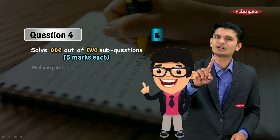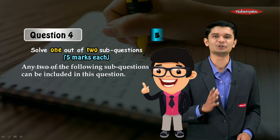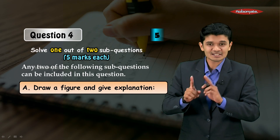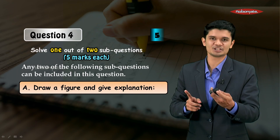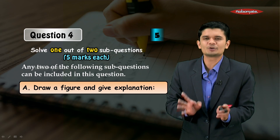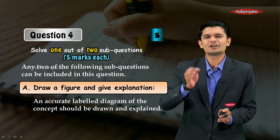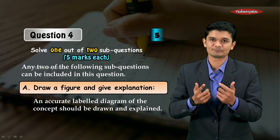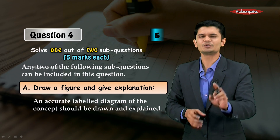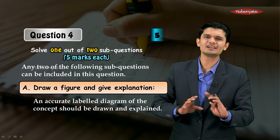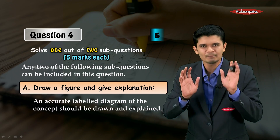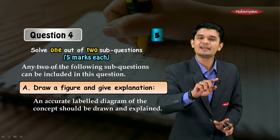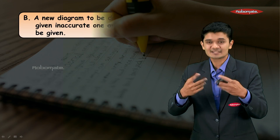For our last question, Question Number 4, this question is for five marks. Keep in mind you have to solve only one of the two options given. The first type is draw a figure and give an explanation — understand the question, draw a neat and clean labeled diagram for the concept, and make sure to explain it. For drawing questions, make sure to take sufficient sharp pencils to the exam. Don't waste time sharpening — take many sharp pencils and keep used ones aside.